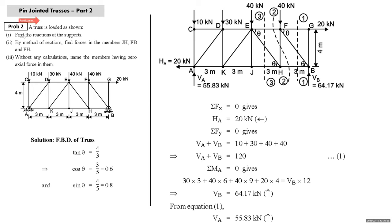Second problem: the truss is loaded as shown. Find the support reactions, then find forces in members JH, FB, and FH by method of sections without any calculation, and name members having zero force. First we draw the FBD. The angle theta is marked as an alternate angle — tan theta = 4/3, giving a 3-4-5 right triangle, so cos theta = 3/5 and sine theta = 4/5.